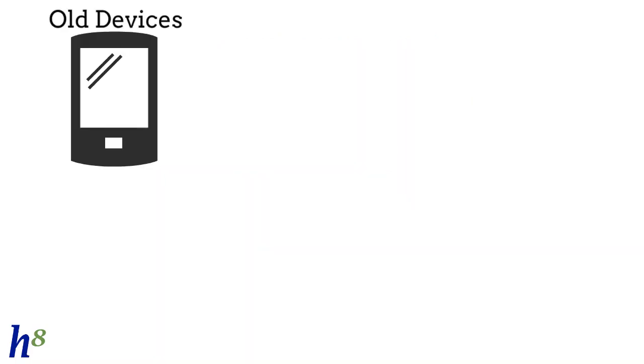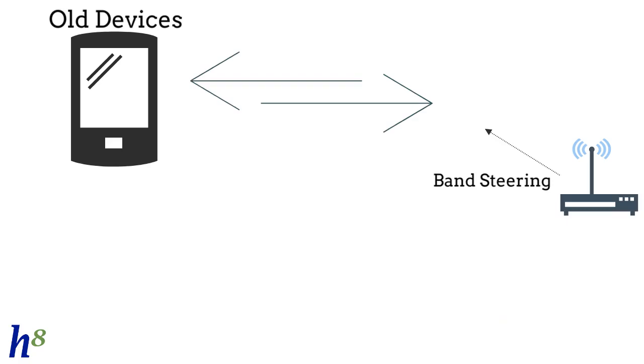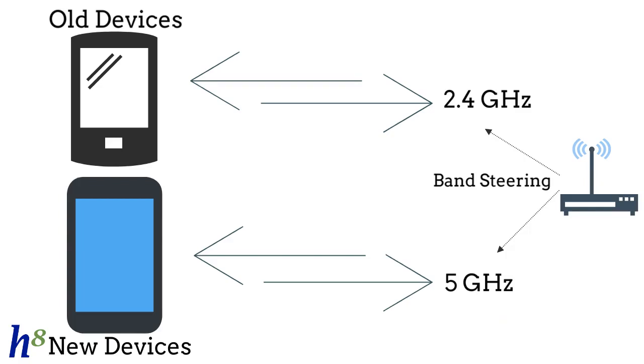Most of the old devices don't come with the support of 5 GHz because it is new. This is where Band Steering jumps in. Band Steering automatically connects old devices with a 2.4 GHz band network and new devices with 5 GHz networks, reducing the chance of network congestion.